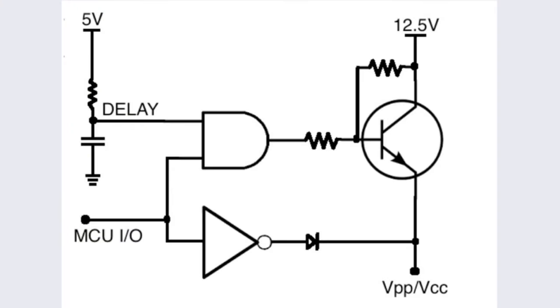First up we have a traditional RC reset delay circuit tied to one input of an AND gate. At power up it takes some time for the capacitor to be charged through the resistor before it pulls the input to the AND gate high.